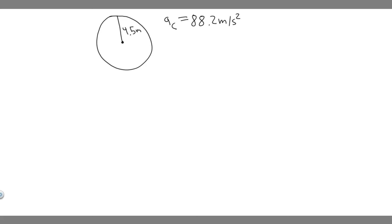In this problem, we're told human centrifuges are used to train military pilots and astronauts in preparation for high-G maneuvers. A trained, fit person wearing a G-suit can withstand accelerations up to about 9G or 88.2 meters per second squared without losing consciousness. Part A: If a human centrifuge has a radius of 4.5 meters, what angular speed results in a centripetal acceleration of 9G? And Part B: What linear speed would a person in the centrifuge have at this acceleration?